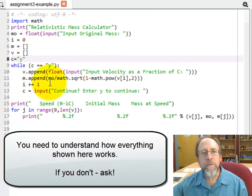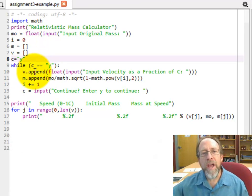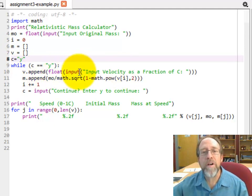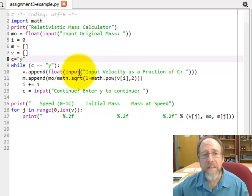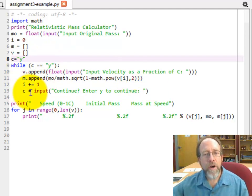How do you define an empty array? M equals open bracket, close bracket. How do you append a value onto an array? Right there. Take the name of the array, v.append. How do you convert a string to a float? There's the float function. How do you input a value from the user? It's not that hard.